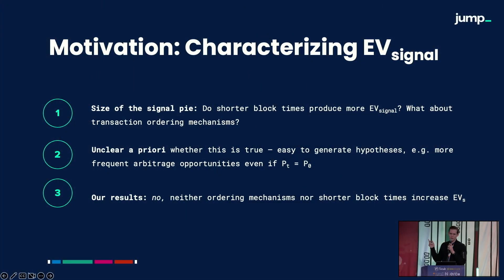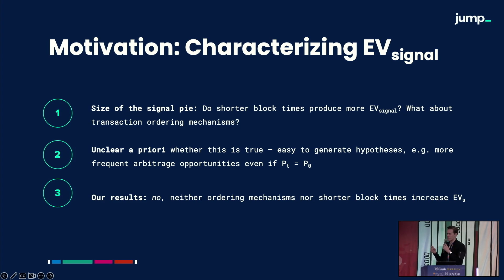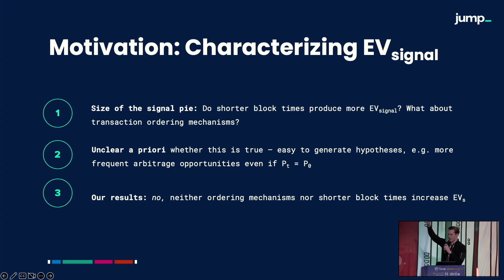With that, we can ask some interesting questions about block design — specifically, the size of the signal pie. For example, if we change the block time, does it affect the amount of signal MEV that we have? What about the transaction ordering mechanism? If we have FIFO or fair ordering, what impact does that have on signal MEV specifically? Now a priori, it is unclear whether this is true or false. It's easy to generate hypotheses under which it's true — for example, if you have more frequent block times, you might imagine you'd get to arb several times before the price converges back. Our results are going to prove that neither the ordering mechanism nor shorter block times increase signal MEV.